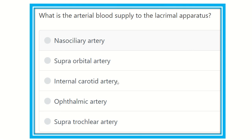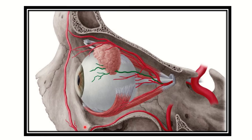Welcome to another question and answer session. What is the arterial blood supply to the lacrimal apparatus? The lacrimal apparatus is formed by the lacrimal gland and some other channels connected to it. The options are: nasociliary artery, supra-orbital artery, internal iliac artery, ophthalmic artery, and supratrochlear artery.